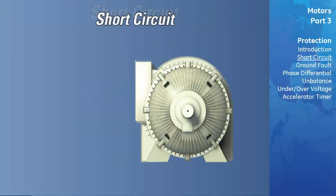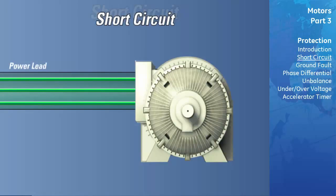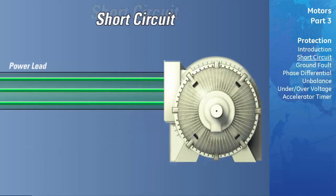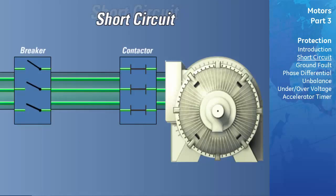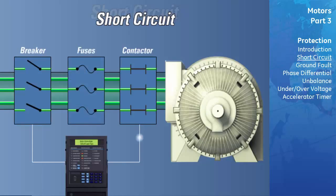Short Circuit Protection. The short-circuit element provides protection for excessively high overcurrent faults. Phase-to-phase and phase-to-ground faults are common types of short circuits. The short-circuit trip element is coordinated with external upstream fuses such that the element will operate first.